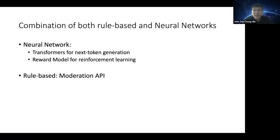ChatGPT actually consists of two parts. The first is a neural network part, where you use a neural network for next token generation — to find out what's the next token to continue your sentence. The second part is the reward model, or the reinforcement learning part, where you learn a reward function for your prompts.